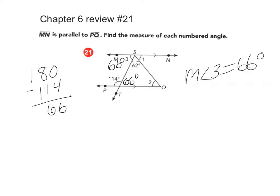So if I do the measure of angle 2 plus 66 degrees plus 62 degrees, it equals 180 degrees, or the measure of angle 2 plus 128 degrees equals 180 degrees.